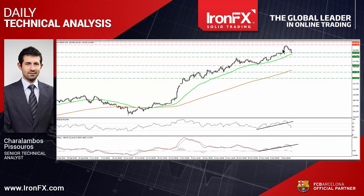Both of our short-term oscillators fell below their respective upside support lines. Moreover, the RSI dipped below its 50 line, while the MACD, although within its positive territory, stands below its trigger and is pointing down.